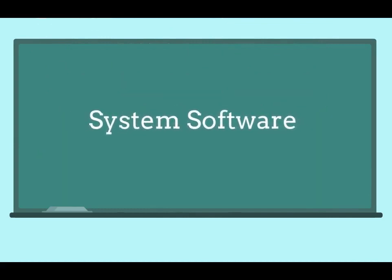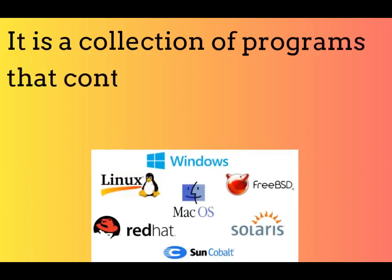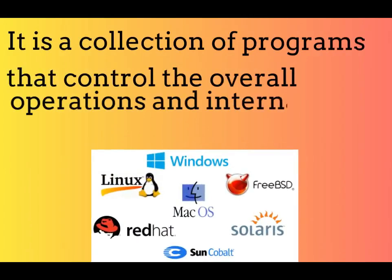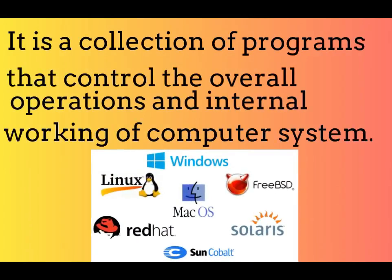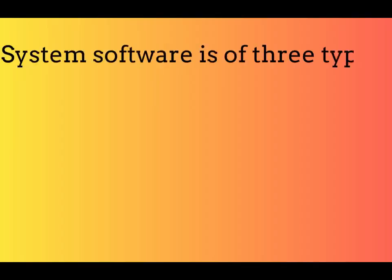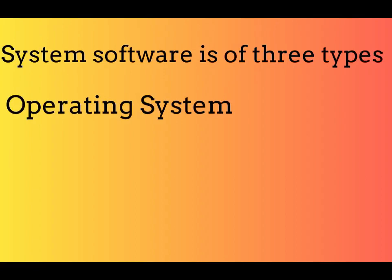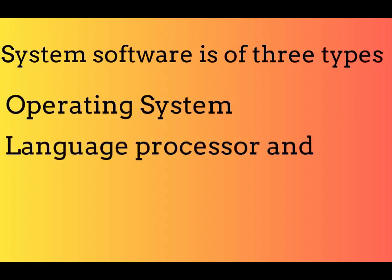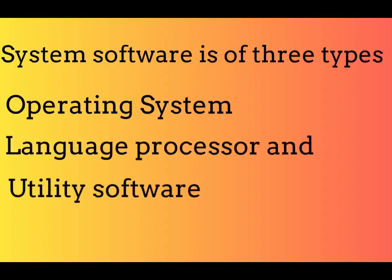System Software is a collection of programs that control the overall operations and internal working of a computer system. System Software is of three types: Operating System, Language Processor, and Utility Software.